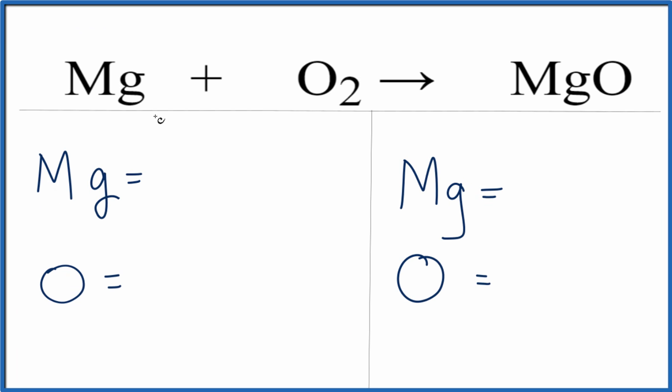So we have one magnesium. If there's nothing written, we assume it to be one. So we have one magnesium, two oxygens, one magnesium, and only one oxygen on the product side. So the equation's not balanced.